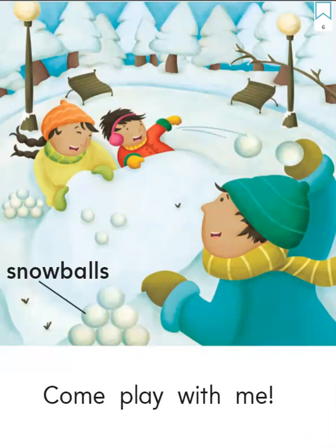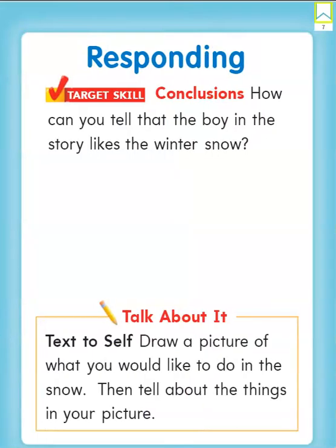Now let's talk about our story. Our target skill is conclusions. A conclusion is how the story ends. How can you tell that the boy in the story likes the winter snow? Were there clues that told us — that we read about or saw in the illustrations — that can give us a clue that the boy likes the winter snow?